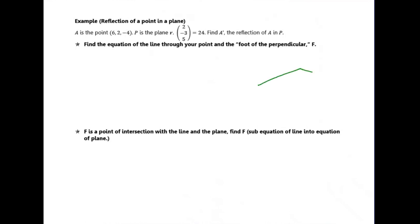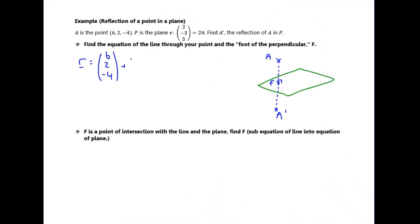Visually: here's a plane in green, a point A above it, which gets reflected down to A dash in the plane. The line meets the plane halfway along A to A dash and meets it at a right angle. First, find the equation of the line through your point and the foot of the perpendicular F. The line needs a point — point A which is (6, 2, minus 4) — and a direction vector. Because the line is perpendicular to the plane, we use the normal vector of the plane as the direction vector, which is (2, minus 3, 5). That's the equation of the line through A perpendicular to the plane.